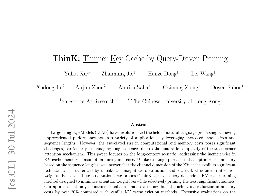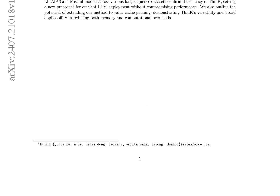The authors address the inefficiencies in KV cache memory consumption during inference, particularly in managing long sequences due to the quadratic complexity of the transformer attention mechanism. Unlike existing approaches that optimize memory based on sequence lengths, THINK uncovers that the channel dimension of the KV cache exhibits significant redundancy, characterized by unbalanced magnitude distribution and low-rank structure in attention weights.